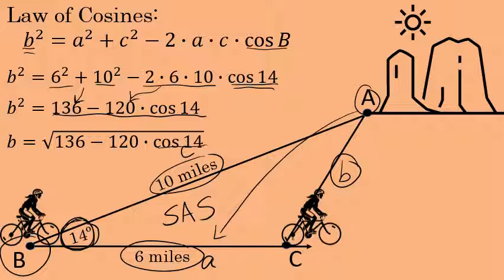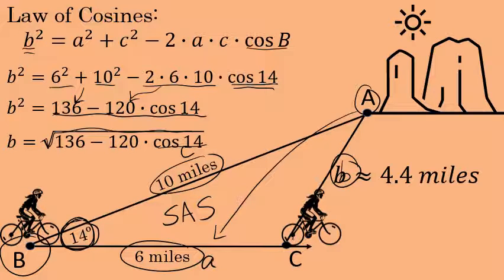Again, the cosine of 14 will be irrational, and the square root of this expression certainly will be irrational as well. I'll round that off to the nearest tenth and find that b is equal to 4.4 miles. The distance from point C to point A is approximately 4.4 miles.